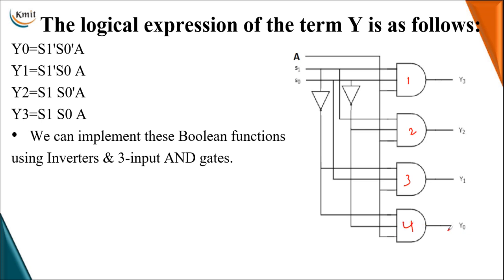The first AND gate gives output Y0 — S0 bar and S1 bar are connected as inputs along with data input A. Y1 is produced when selection is 0,1 — so S0 and S1 bar are connected. The third AND gate gives Y2 when S1 is 1 and S0 is 0 — so S0 bar and S1 are connected. The last AND gate gives Y3 when S1 and S0 are both 1 — so uncomplemented S1 and S0 are directly connected, making Y3 equal to A when S1 and S0 are 1.